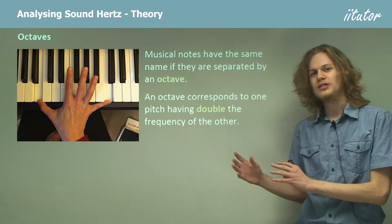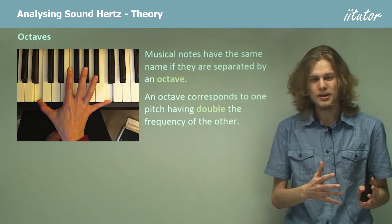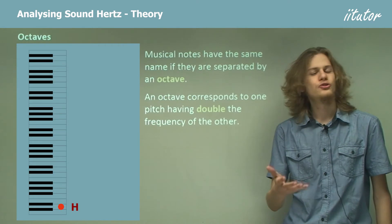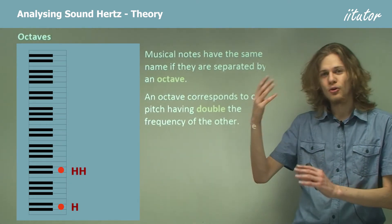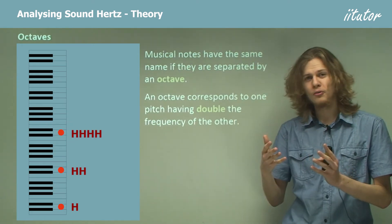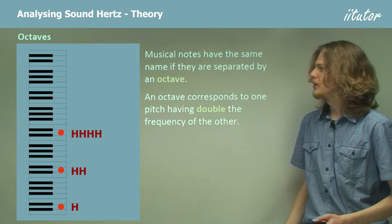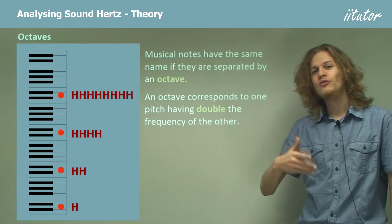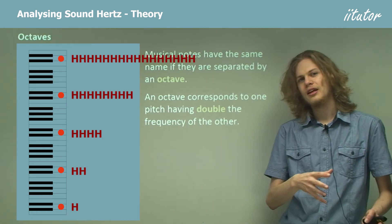So an octave corresponds to a pitch having exactly double the frequency. That means if the lower note is 200 hertz, then the upper note will be double that, 400 hertz. And an octave above that will be double 400, so 800 hertz. This is why as we move up the scale, the musical notes get different distances apart.